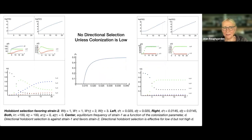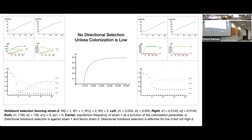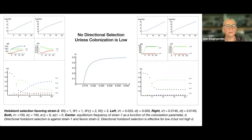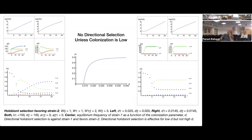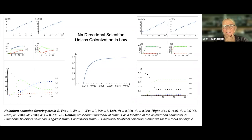There's no directional selection unless colonization is low — we're okay with that. If there's more vertical transmission, that's perhaps analogous to saying the colonization parameter is low, though it's not directly comparable because it's still mixed horizontal transmission. The colonization level being low enough means it's not swamping out between-holobiont variation, which you really need for holobiont selection to operate on.